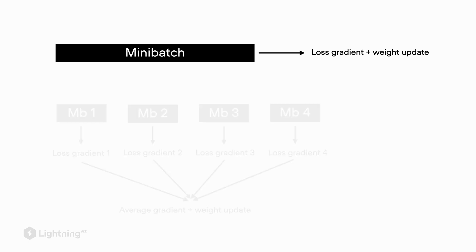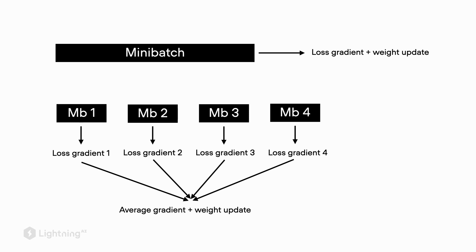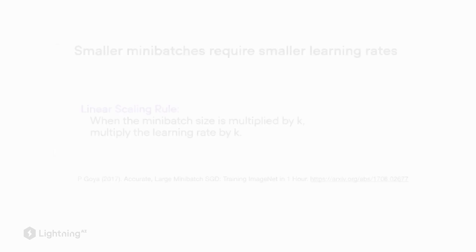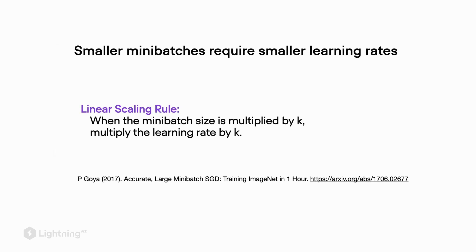In data parallelism, we compute the losses for each micro-batch, then average the gradients, and then perform the weight update. This is a subtle difference: instead of computing gradients based on the whole dataset, we compute multiple gradients on smaller datasets and average them.